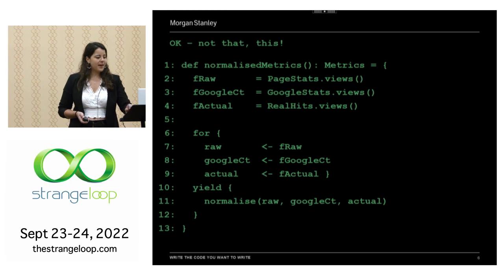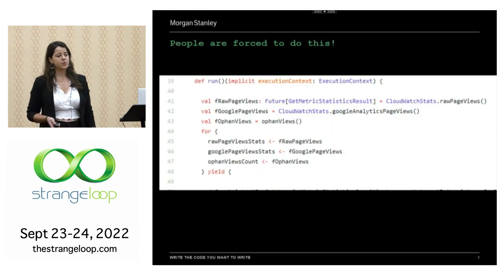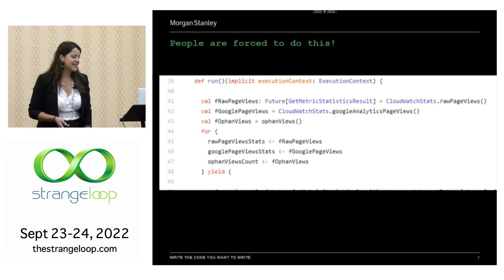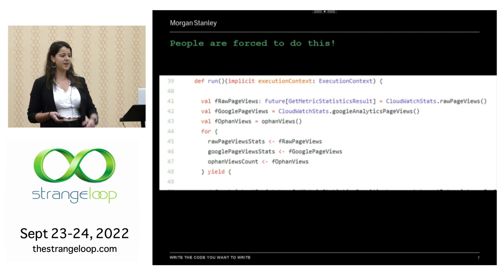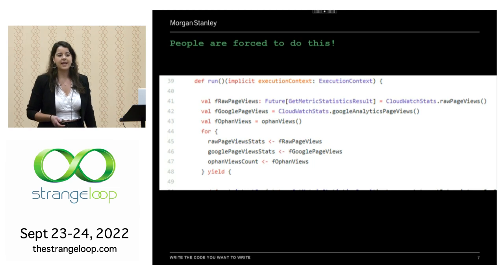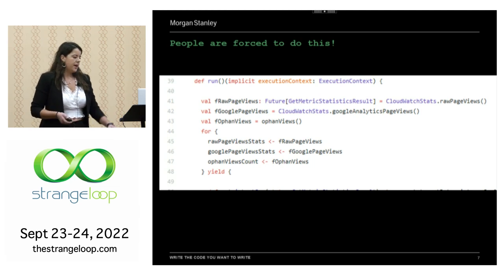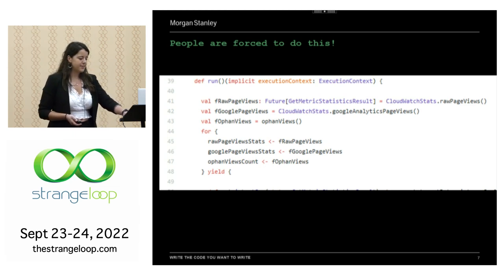This may seem like a fabricated example, but it was actually taken from open source code on the Guardian's GitHub. The developers there did a brilliant job of keeping some of the clarity they presumably started with. You can see the parallels — they've had to lift futures to the top of their function and then use the for comprehension to get at the underlying data. Developers really are having to do this, because execution concern has leaked into their type system.